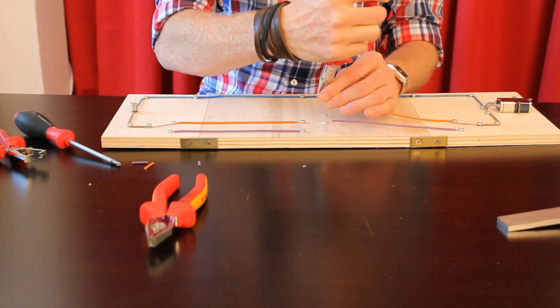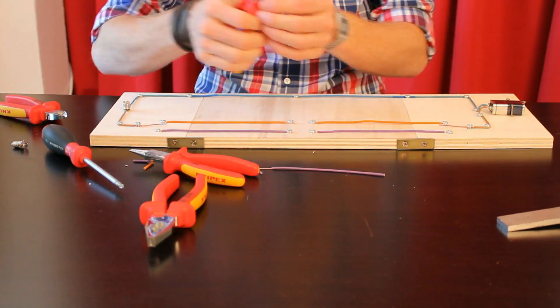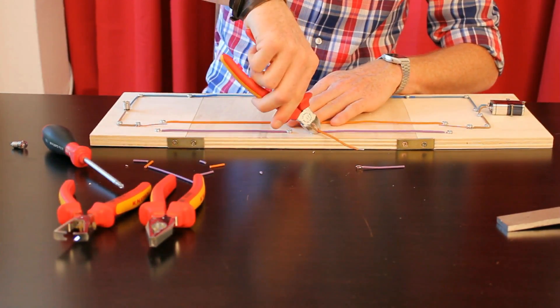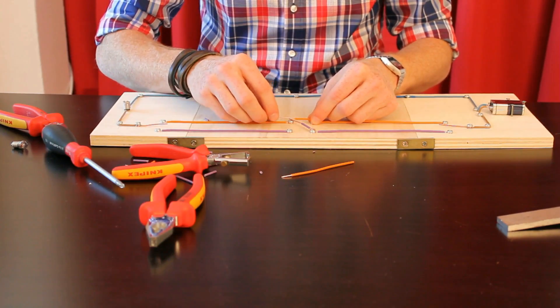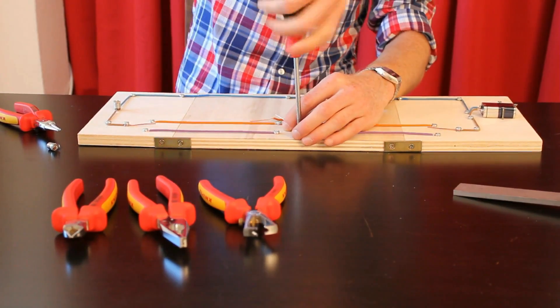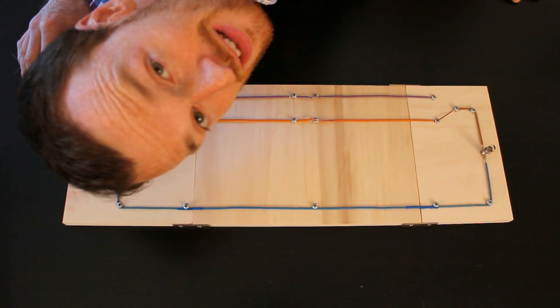Wir brauchen vier Schrauben. Und zwei bewegliche Kontakte werden gebogen. Nicht vergessen, dass die beiden Kontakte isoliert bleiben müssen, sonst funktioniert es nämlich nicht. Ja, ihr seht es schon.